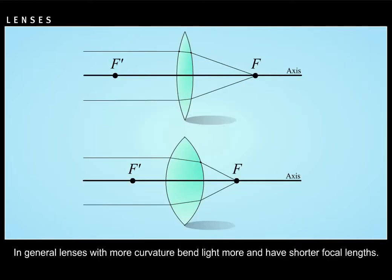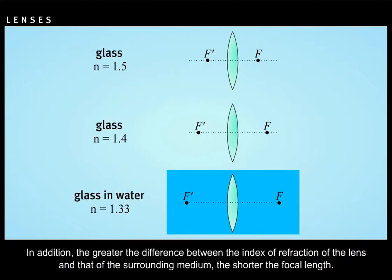In general, lenses with more curvature bend light more and have shorter focal lengths. In addition, the greater the difference between the index of refraction of the lens and that of the surrounding medium, the shorter the focal length.